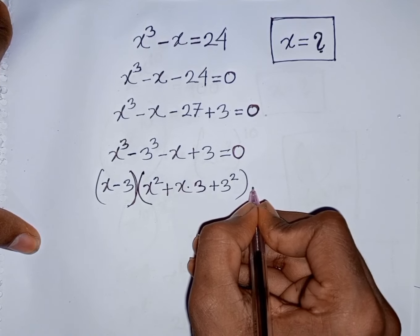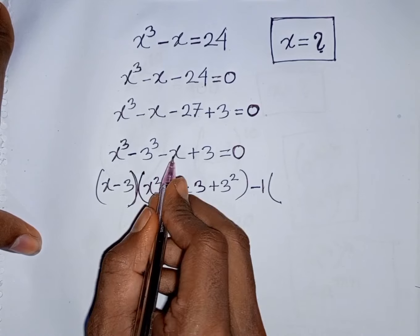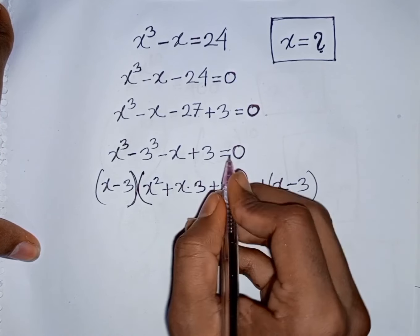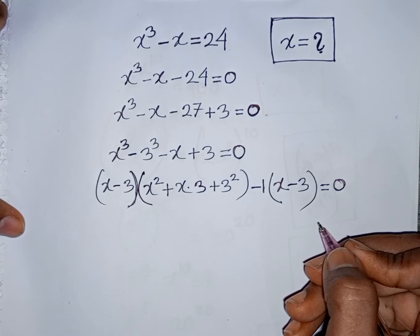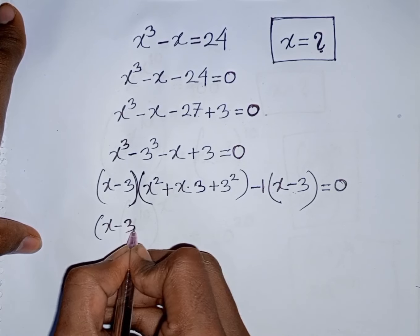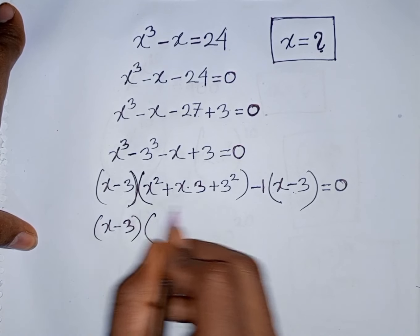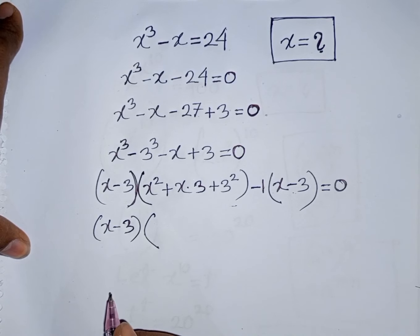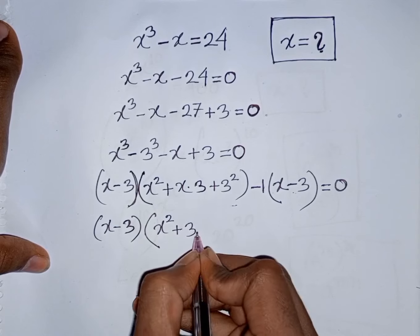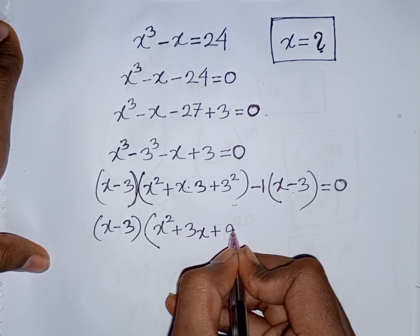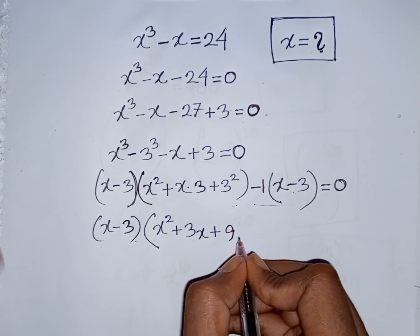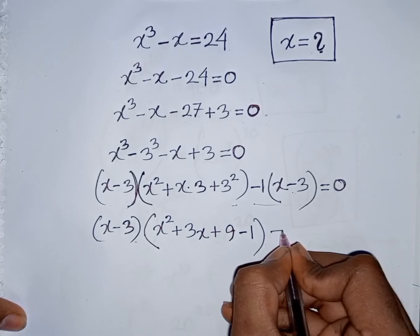From the remaining terms, we take out common factor -1 from the bracket, giving -1(x - 3) = 0. Now take common (x - 3), so (x - 3) is factored out. After cancellation, we have x² + 3x + 9, then minus 1, bracket close, equals 0.